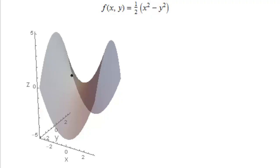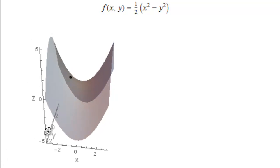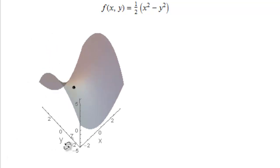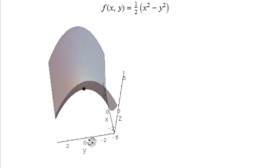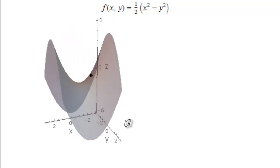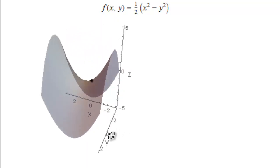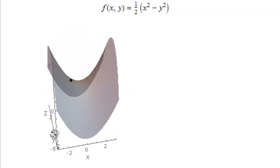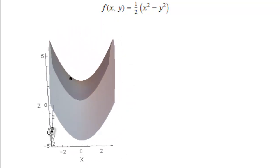This is how the surface f of xy equal to half times x squared minus y squared looks like. I can turn the surface around to let you have a view of how this looks. You have the x-axis, y-axis, and z-axis, and this is how the surface looks.